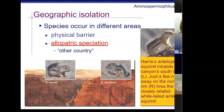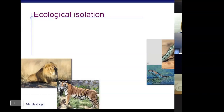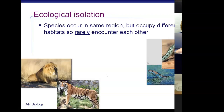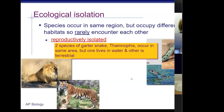Ecological isolation is a sympatric form of speciation where organisms live in the same region but occupy different habitats, so they rarely encounter each other. Lions and tigers, for example, live in different habitats. The anolis lizards are another good example — some are ground dwellers, some live in high branches, creating miniature habitats within their ecosystem. Because they don't walk the same path, they don't come across each other.